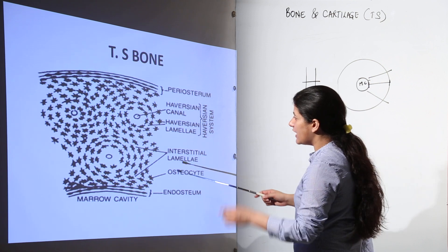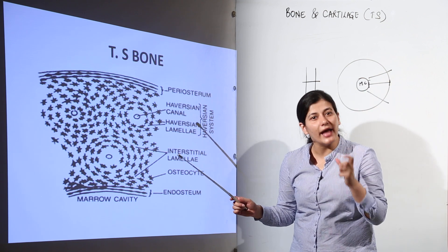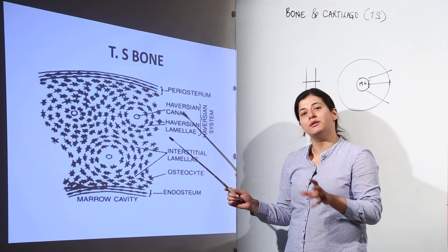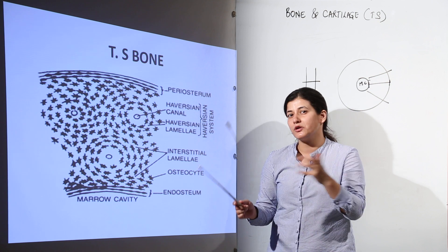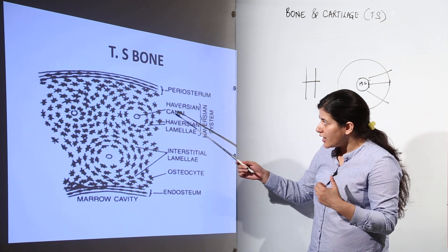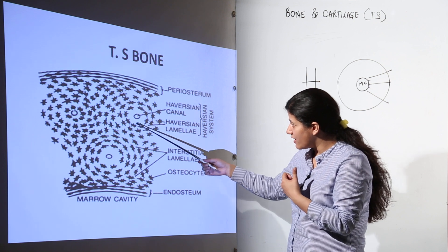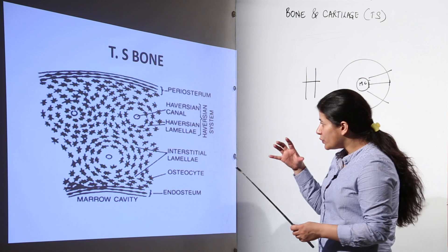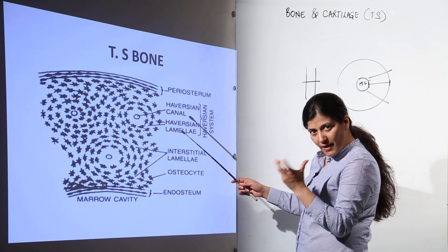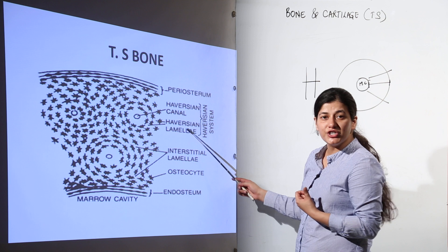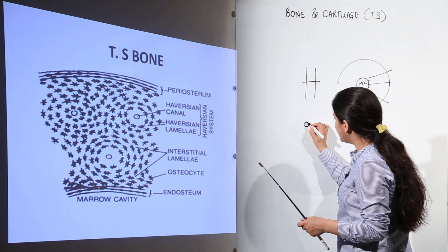In the magnified view we have many Haversian canals. Bone itself is a connective tissue and has nerve supply and blood supply. That is why when a bone gets broken there is a lot of pain — because the nerves are getting broken. Inside the Haversian canal there are nerves, and the Haversian canal is surrounded by Haversian lamellae, which are concentric tube-like structures. The Haversian canal is a central hollow structure surrounded by many concentric micro-tubes called Haversian lamellae.